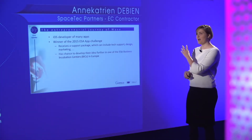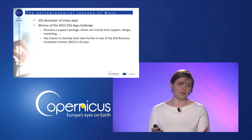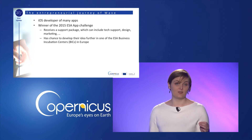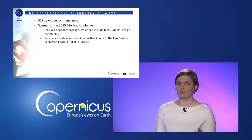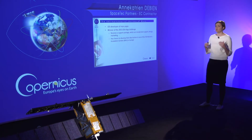It was developed by Subzero, the company of an iOS developer with no background in Earth Observation. He first created the app showing transportation in Vienna and then took it to the Copernicus Masters competition, where he went on to win the ESA app challenge in 2015. This gave him access to a support package and the chance to develop his idea further in one of the ESA business incubators in Europe. This example shows you don't need to know about Earth Observation to use Copernicus in a mobile application.